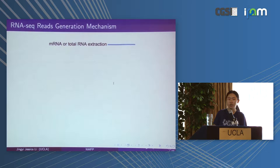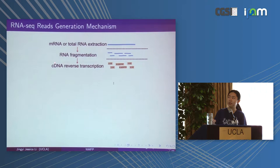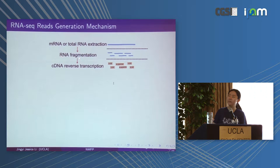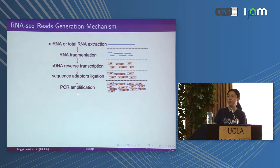RNA sequencing is a technology that allows us to measure isoforms. It starts with the full-length mRNA transcript, which is first chopped into fragments because the technology cannot sequence very long sequences. The stable RNA is then reverse transcribed into cDNA, which stands for synthesized DNA. RNA can be easily digested but cDNA is much more stable and double-stranded. Sequencing adapters are ligated to each side and PCR is used to amplify the signal.